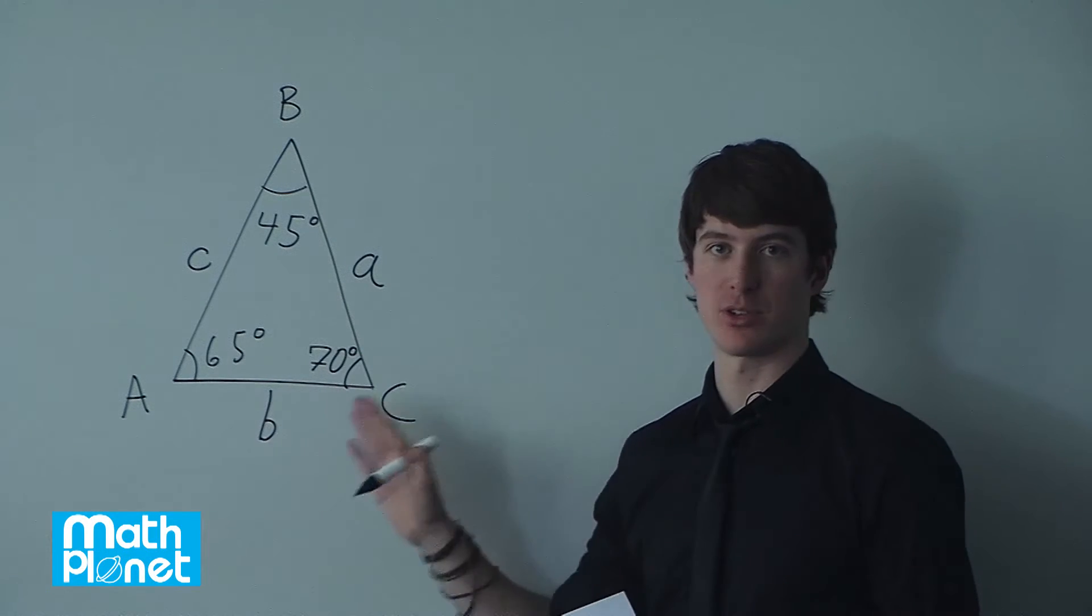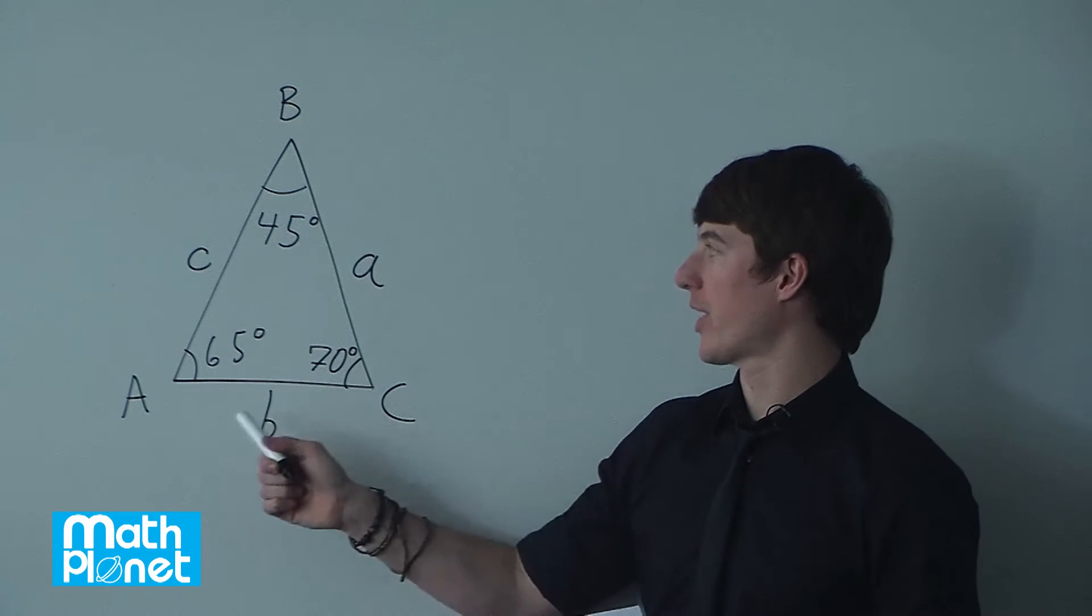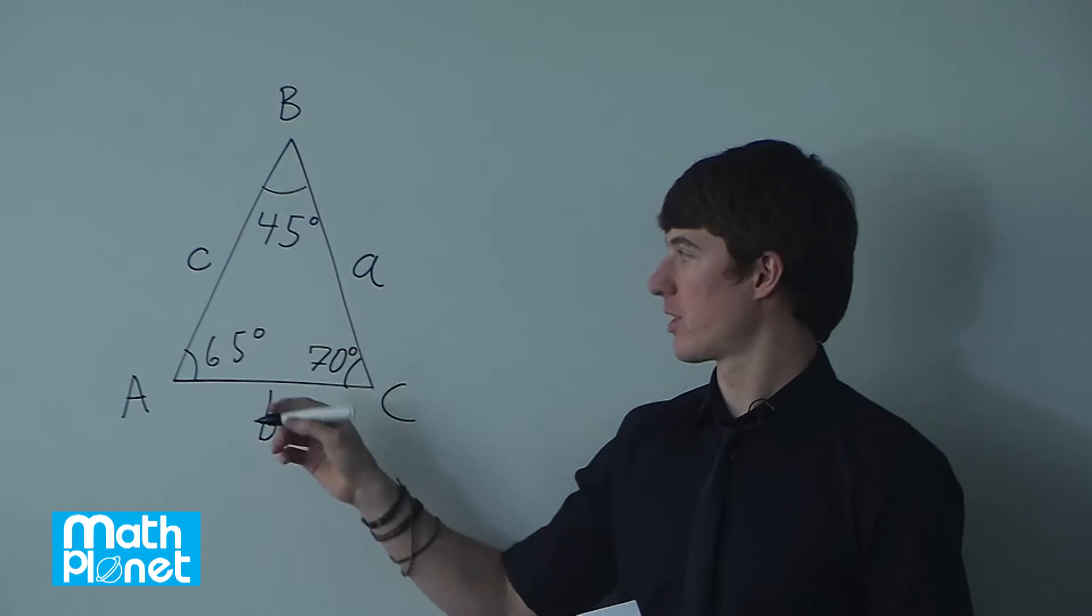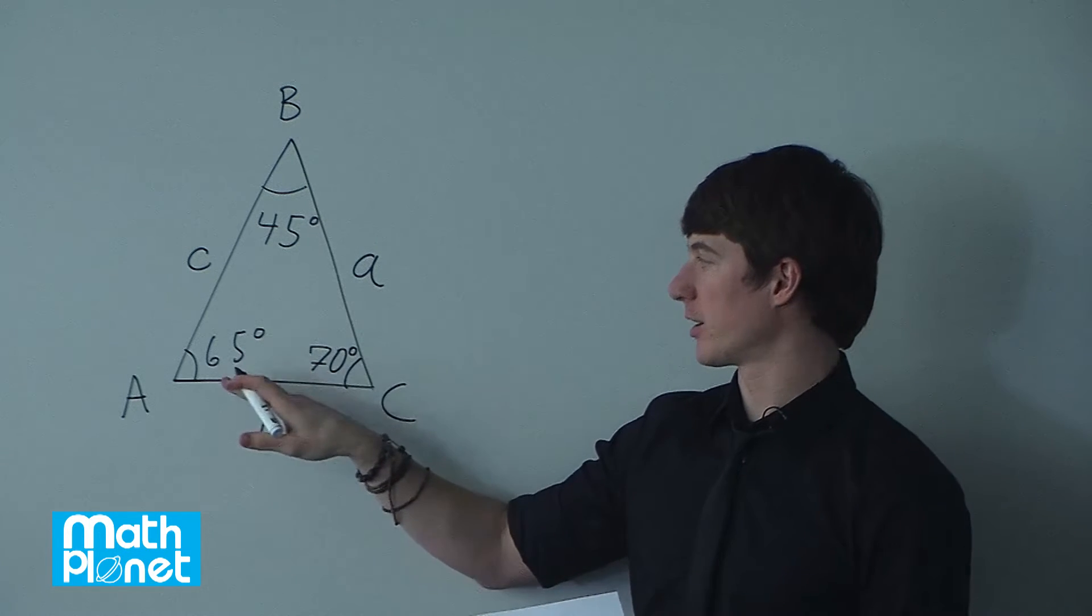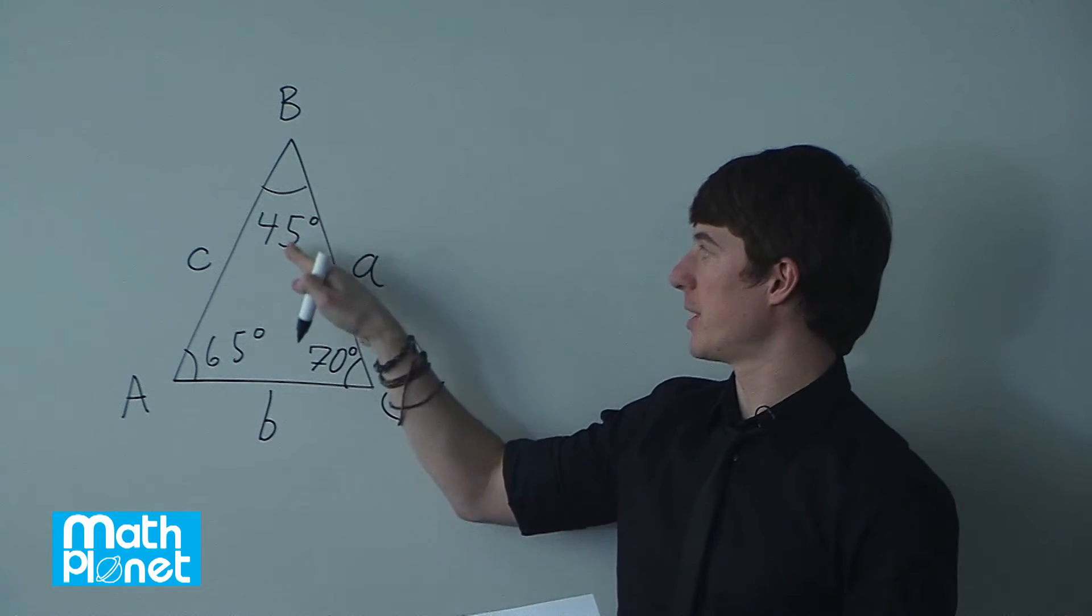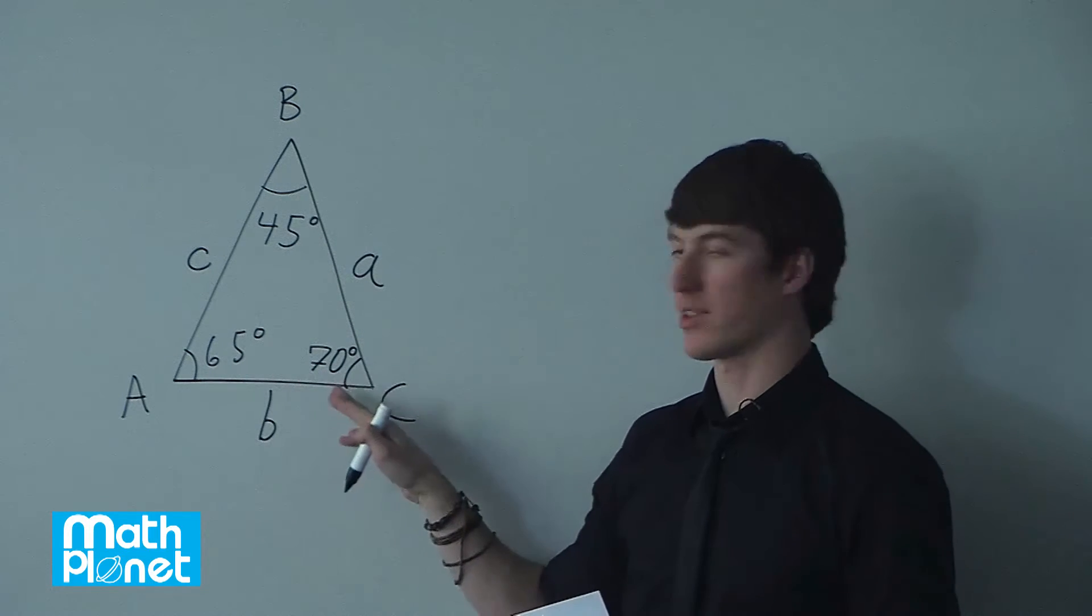Here we have a triangle, an ABC triangle, and I've written it without any a priori knowledge of these angles. So we've just drawn it here knowing that B is 45, A is 65, and C is 70 degrees.